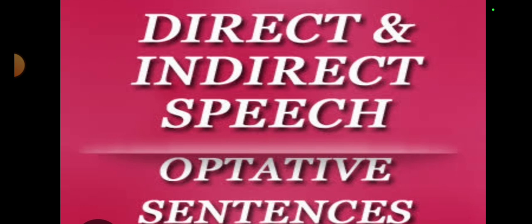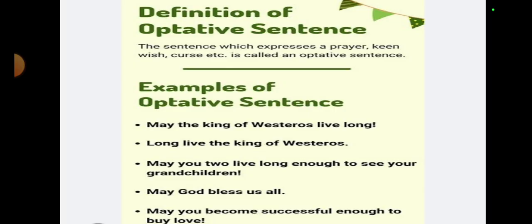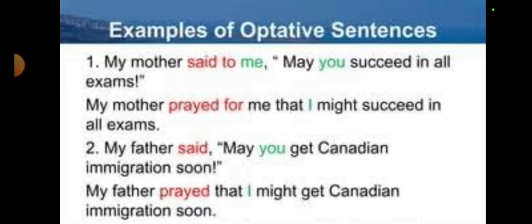It is the turn for optative sentences today. Hope you remember what optative sentences are — these are those sentences which often have some sort of prayer, wishes, or curse in themselves. The examples are given below, you can have a view. Mostly these examples contain the modal verb 'may'. For cursing, wishing, or praying for someone, we use these types of sentences.